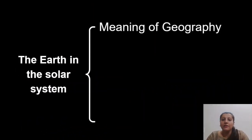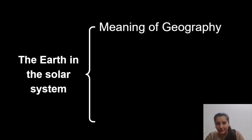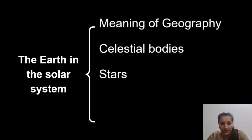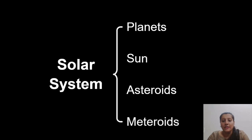What is the meaning of geography? These are some basic terms but even at a higher level of education, we sometimes cannot answer basic things. That's why it is always advised to start from Class 6 basics. We will look at geography and its meaning, then celestial bodies, stars, constellations, solar system, planets, sun, asteroid, and meteorites — all to be discussed in this chapter.